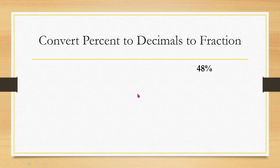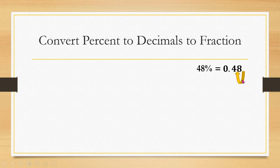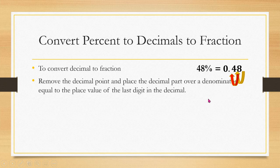Now let's convert percent to decimal. For example, convert 48% to a decimal. Since percent means hundredths, we move the decimal point two places to the left — one and two — giving us 0.48.